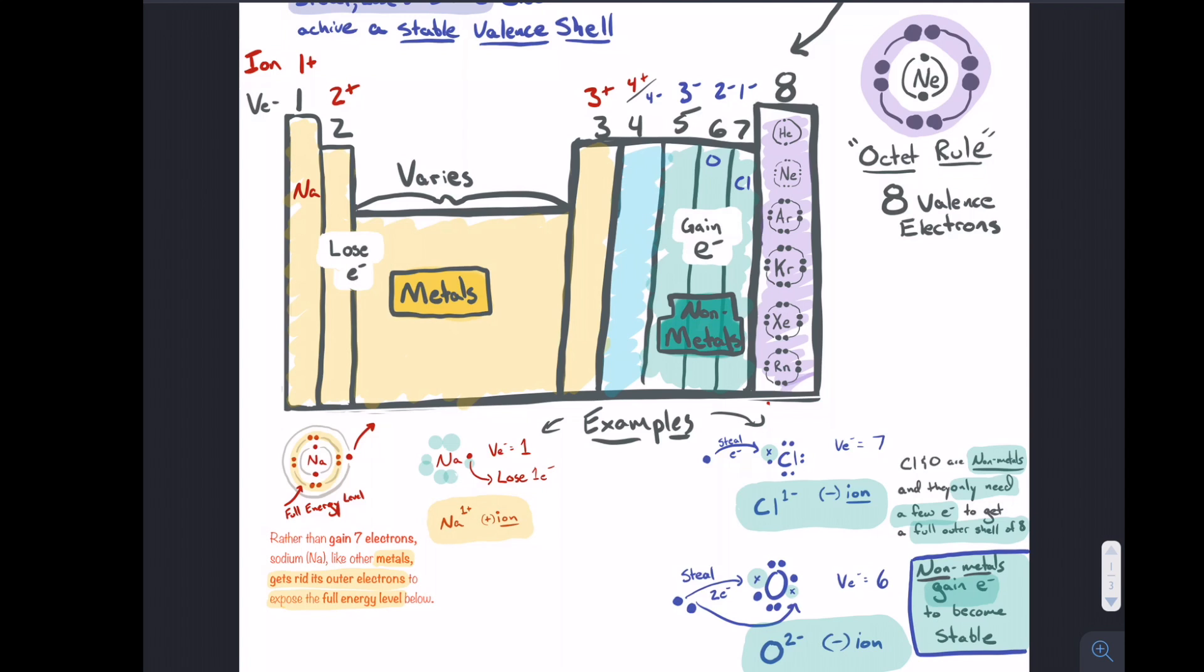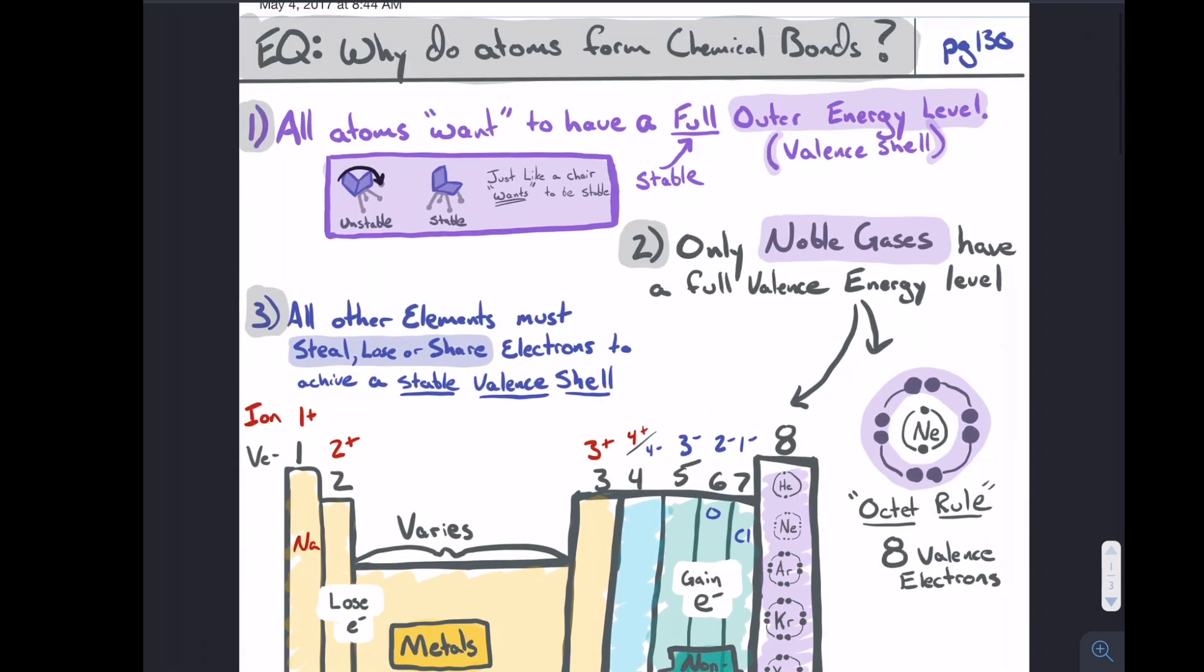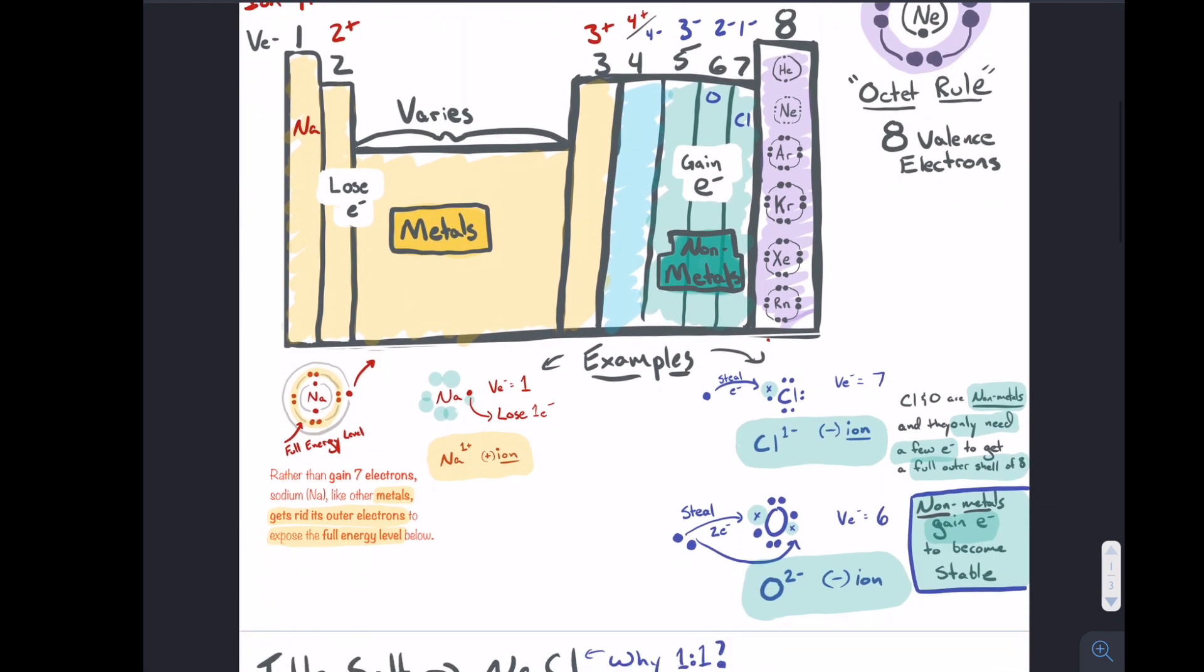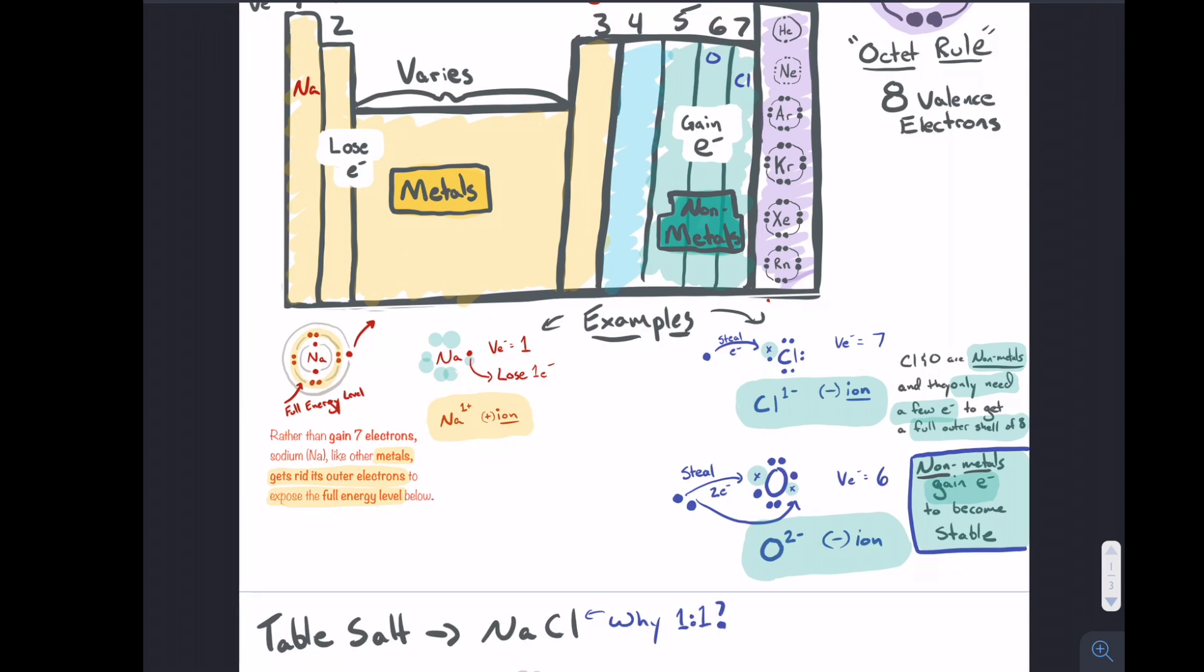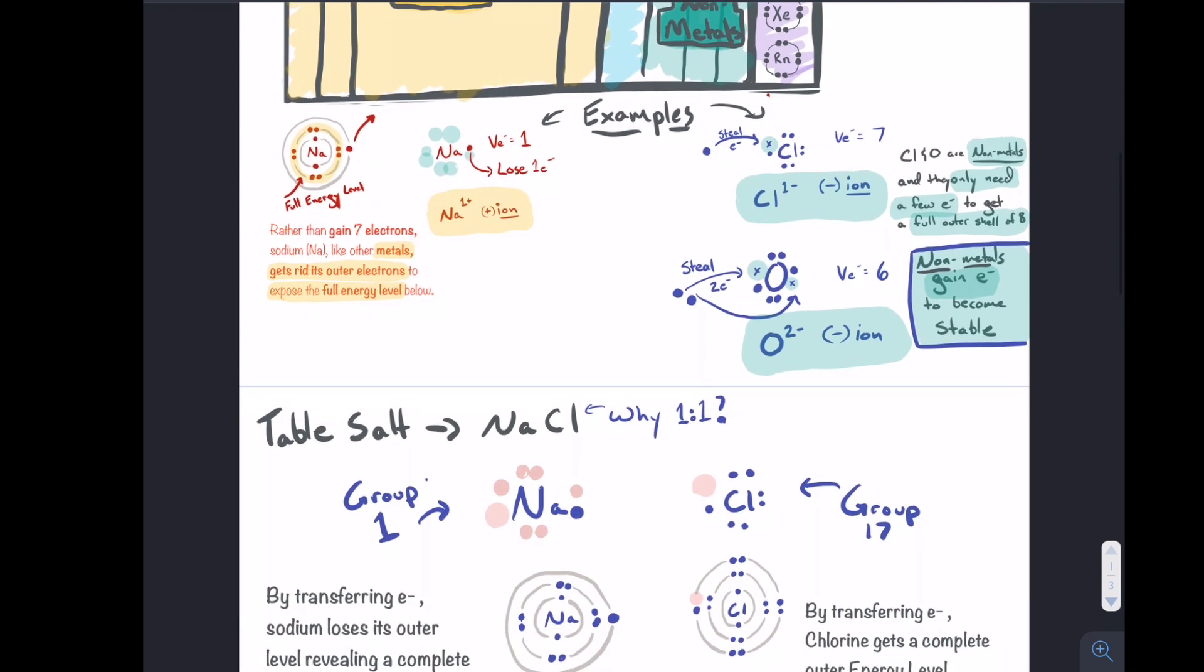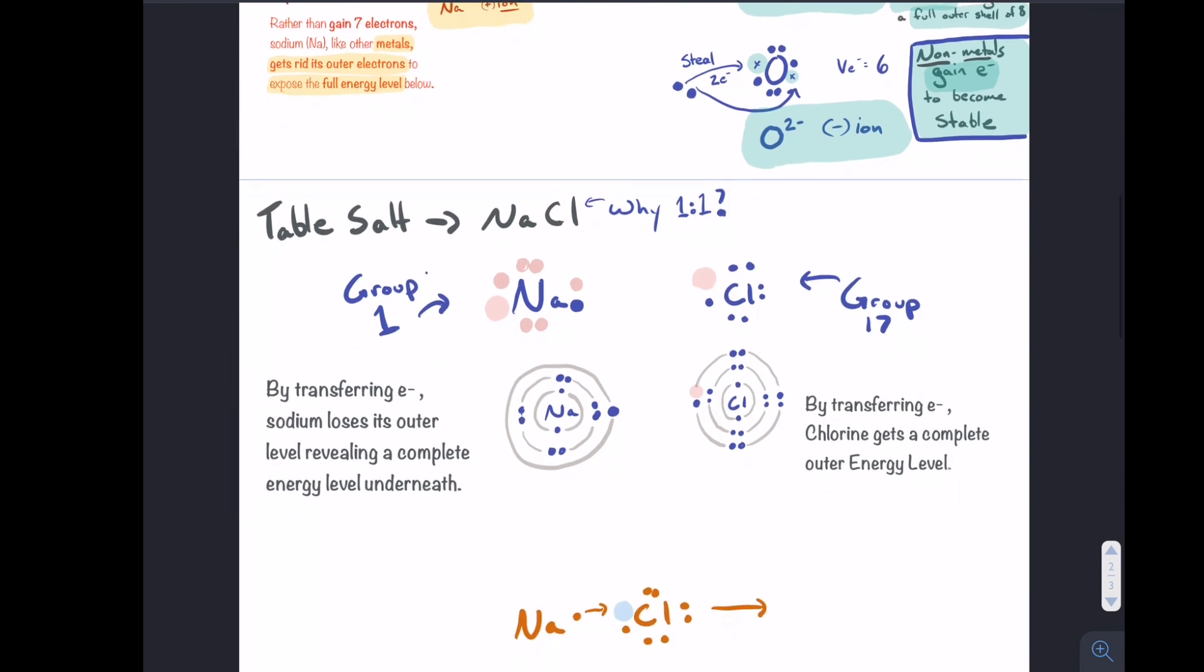So let's take a look at an example of this. This was all about why do atoms form chemical bonds. Let's take a look at an example. It all has to do with getting that stable outer energy level. We see here that metals tend to lose whereas non-metals tend to gain in order to get this. Here's an example I want to take a look at: table salt. Chemical formula for table salt is NaCl. One of the questions you could ask yourself is why is this a one-to-one ratio? Like why is it one sodium with one chlorine? Why isn't it two or why isn't it three?